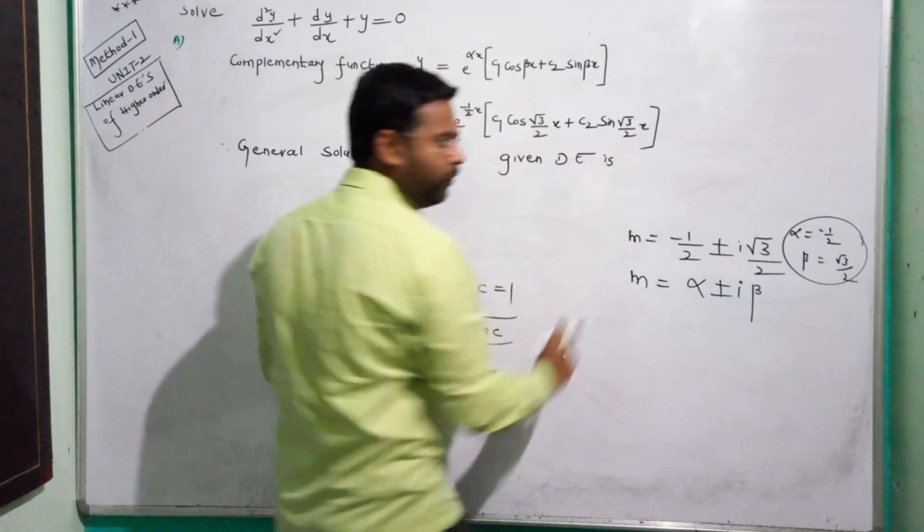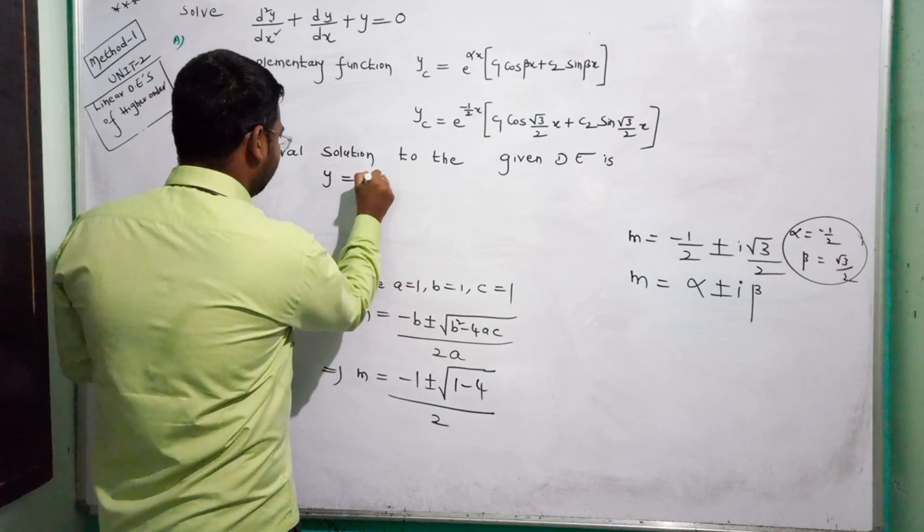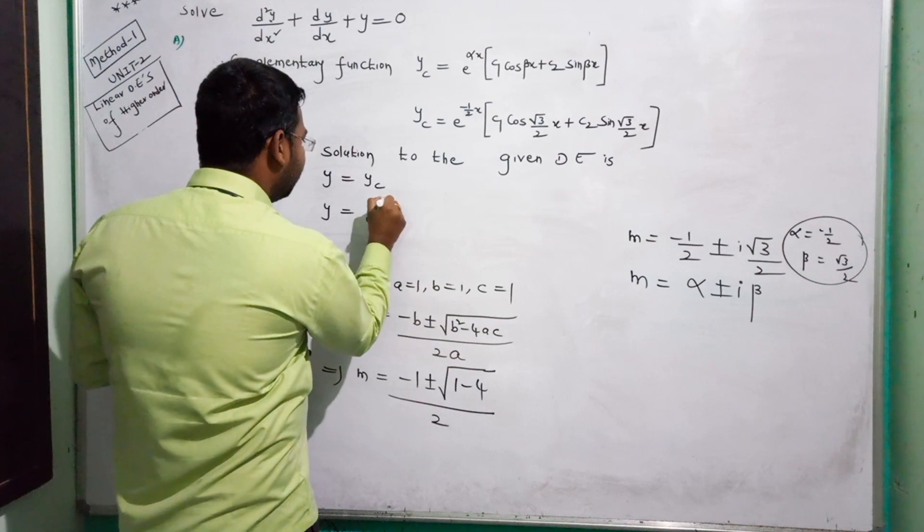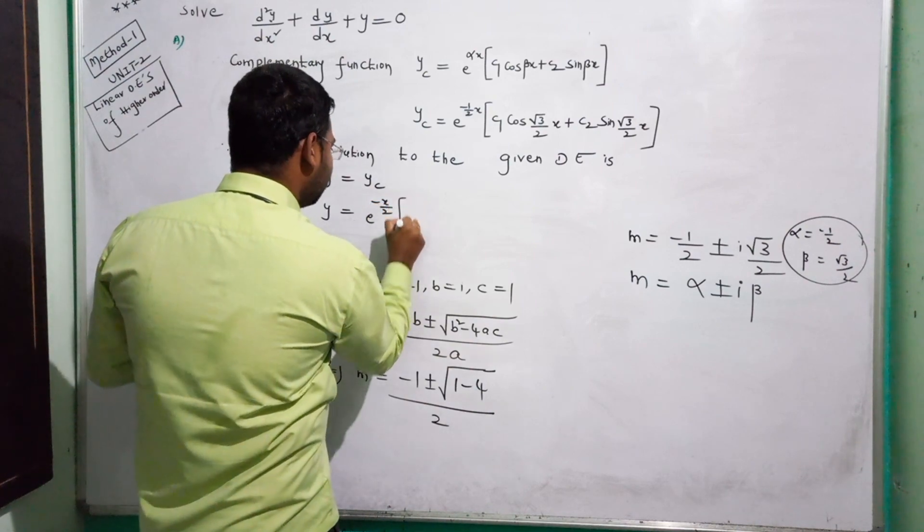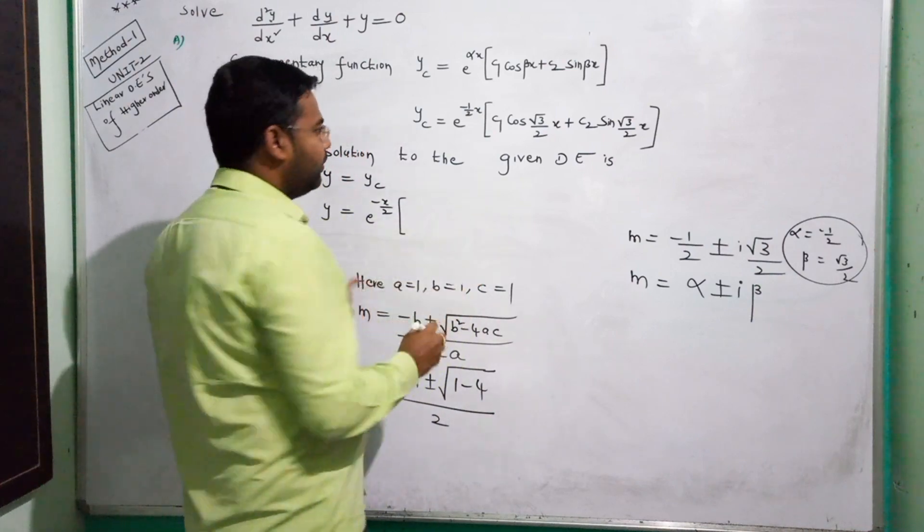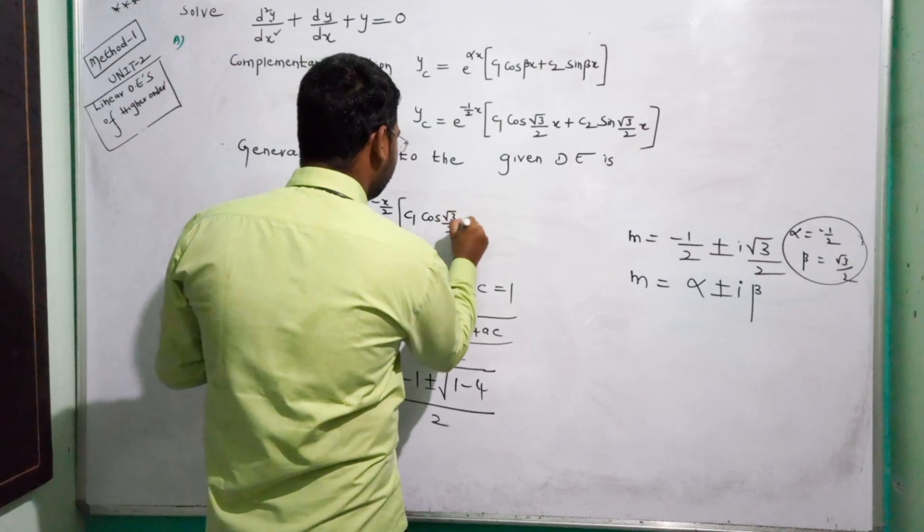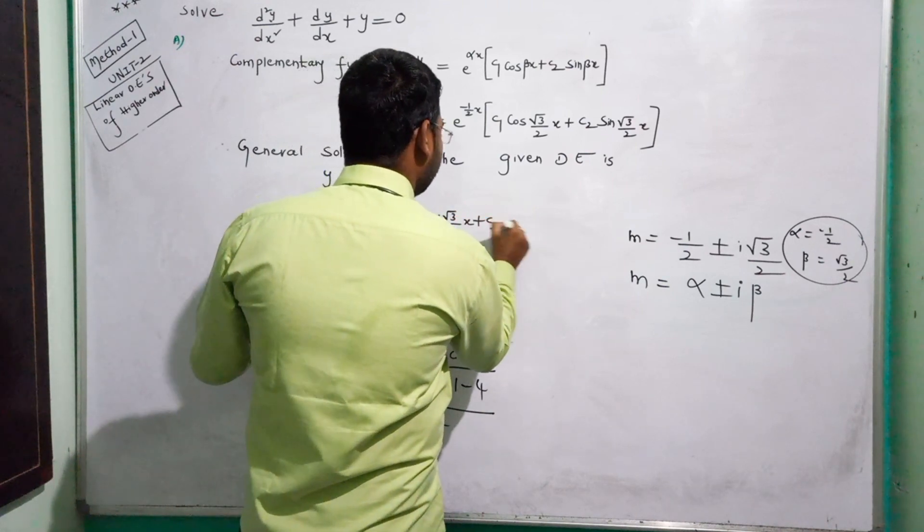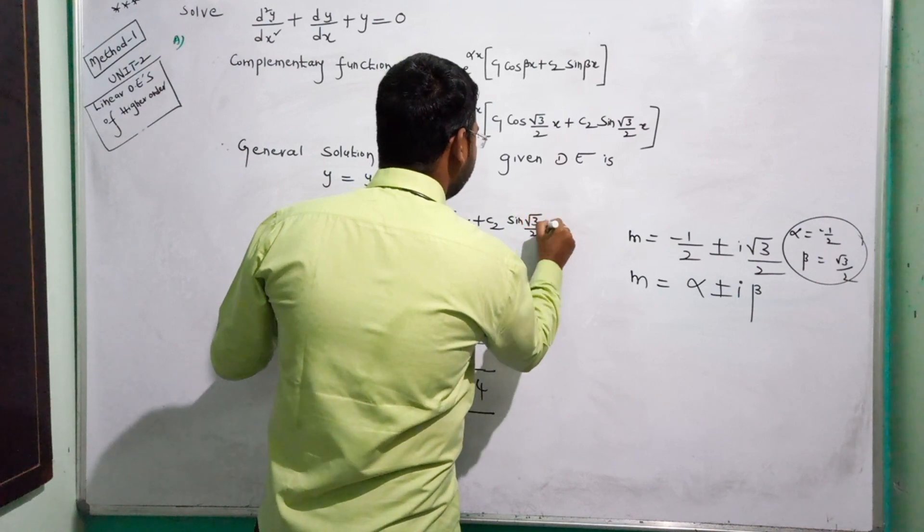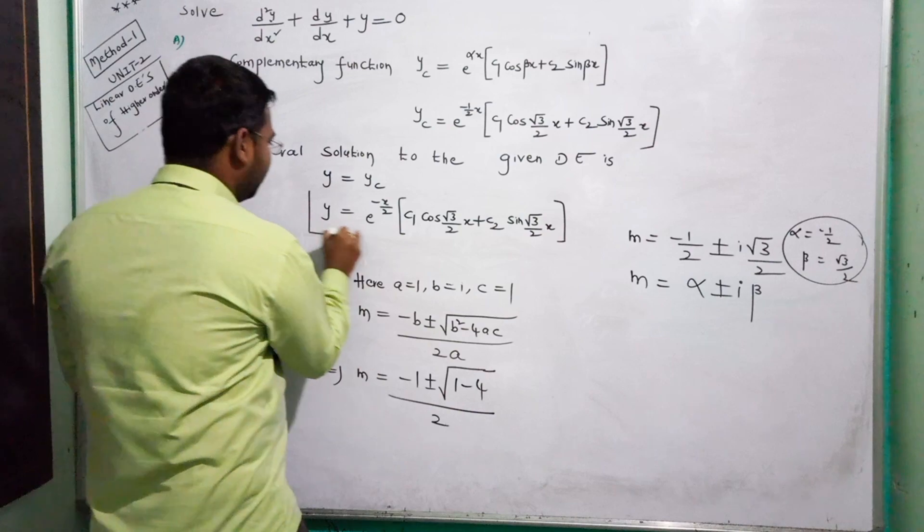So e to the power minus x by 2, times C1 cos root 3 by 2 x, plus C2 sin root 3 by 2 x. This is our final answer.